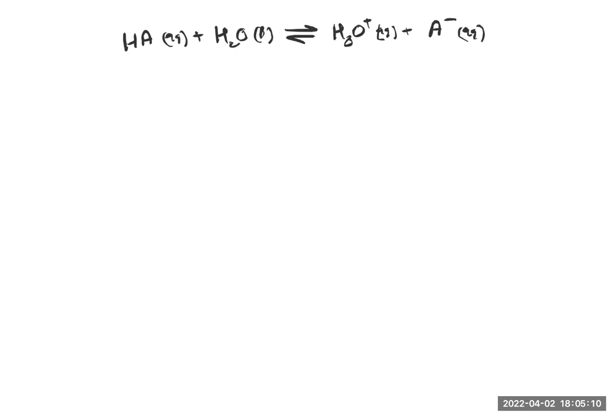What we can do is write an expression for the equilibrium constant for this equilibrium. We can say Ka is equal to H3O+ concentration times A- concentration divided by HA concentration. Since we're dealing with the acid dissociation constant, I'm going to call this Ka.